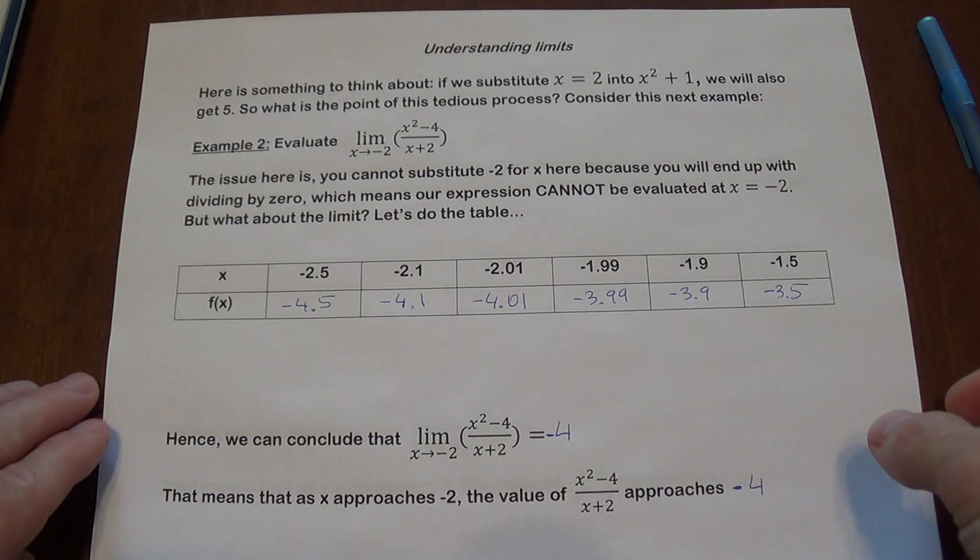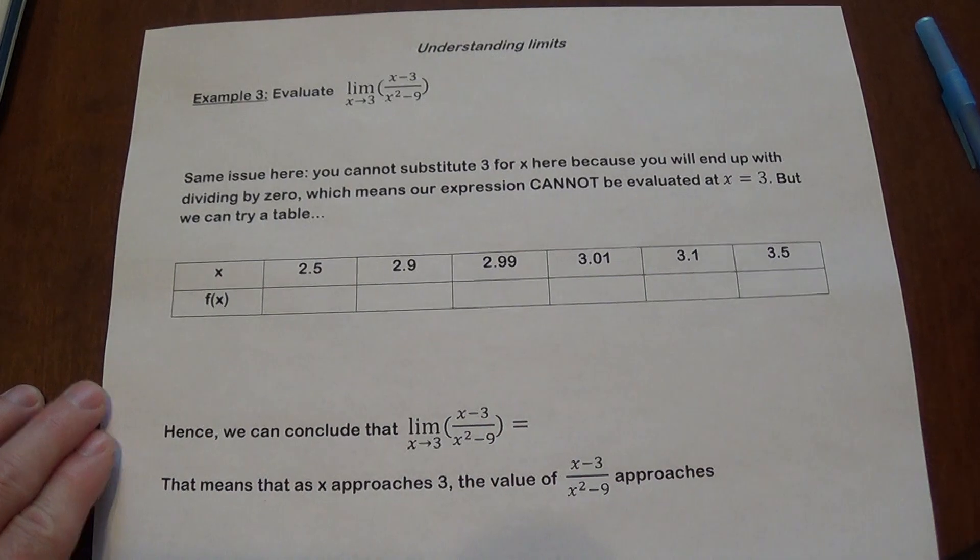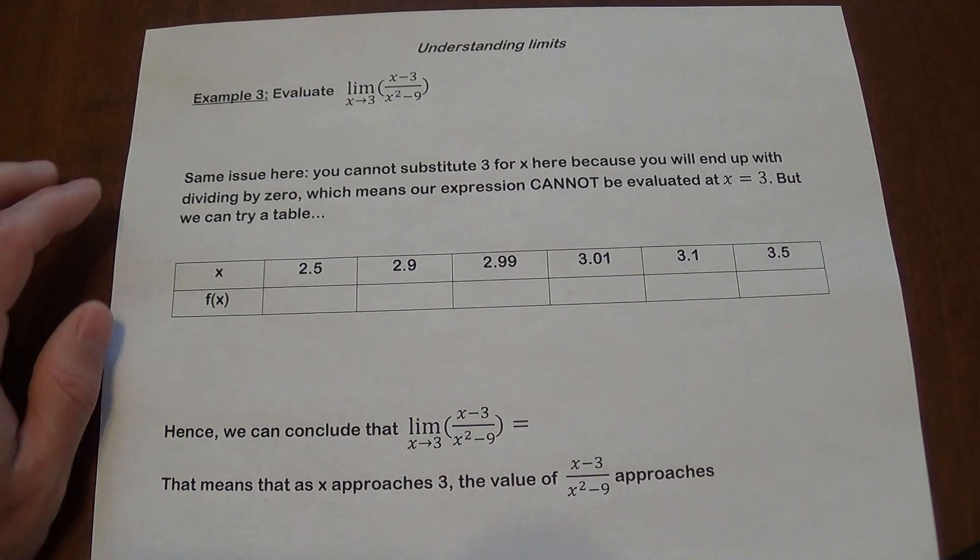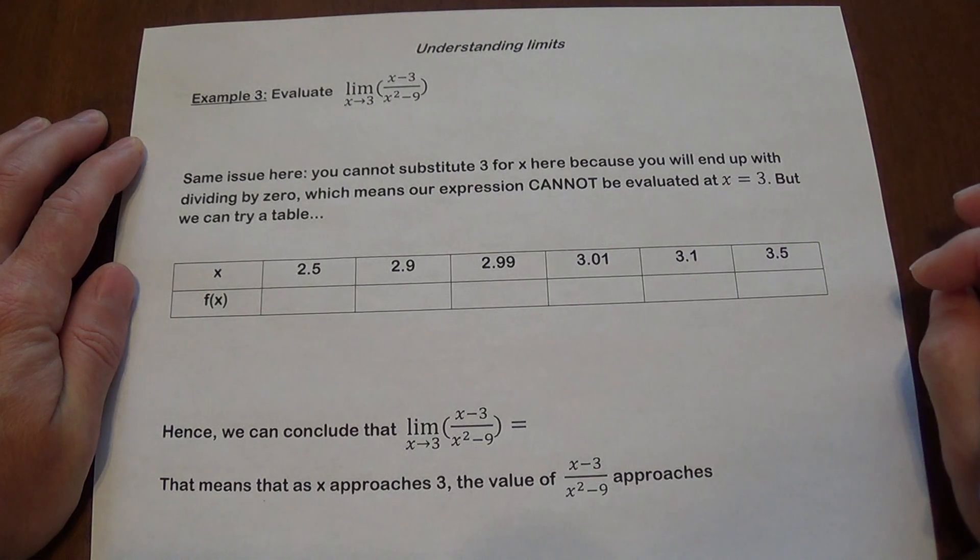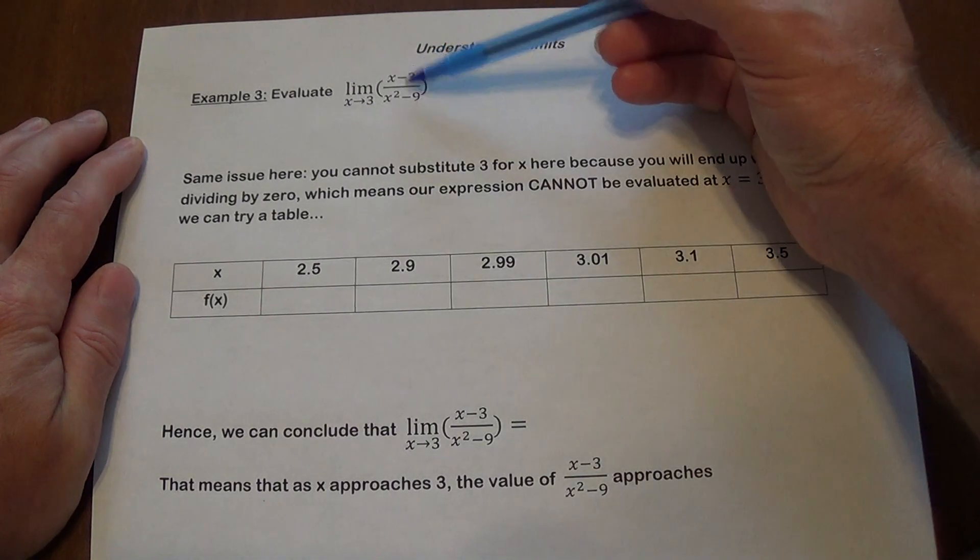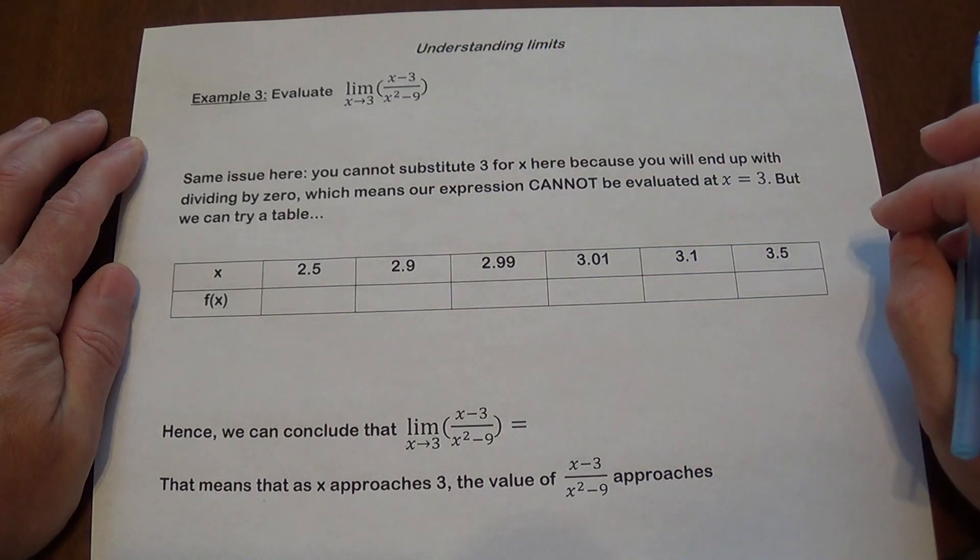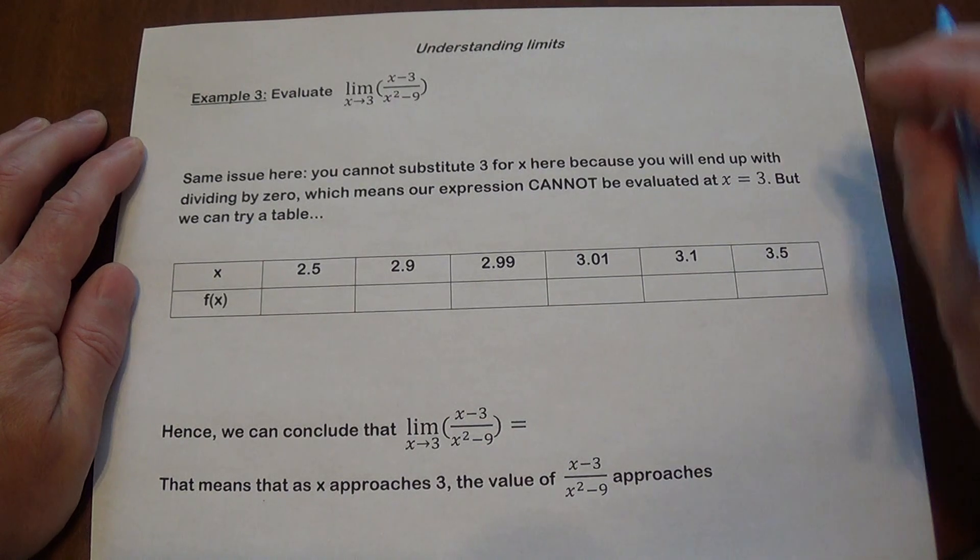Here's one more problem for us to consider. So we need to evaluate this limit as x approaches 3 of x minus 3 divided by x squared minus 9. Same issue. If you try to substitute 3 into this expression, you are going to get 0 divided by 0. It cannot be done. So we cannot evaluate this expression at that point.